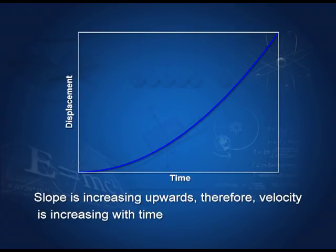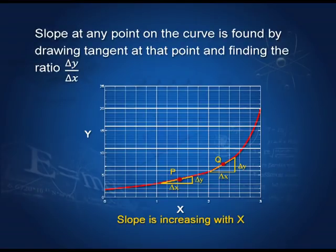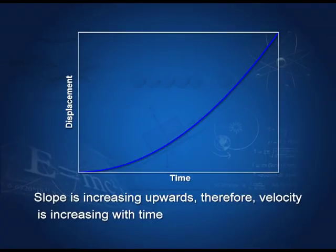Let us take a displacement-time graph where the displacement is increasing and the slope is increasing as we move along the time axis. The slope increasing as we move along the time axis means that as time increases, the slope increases. Therefore, the rate of change also increases, meaning the velocity increases with time.